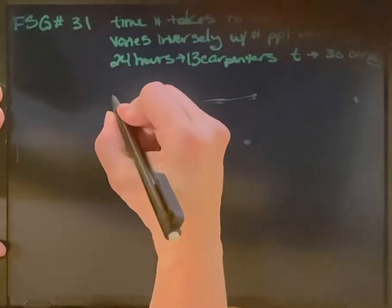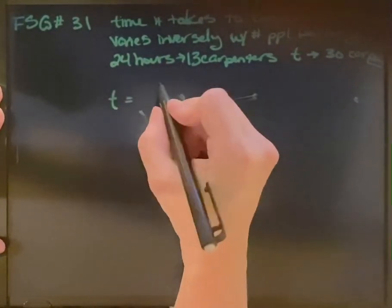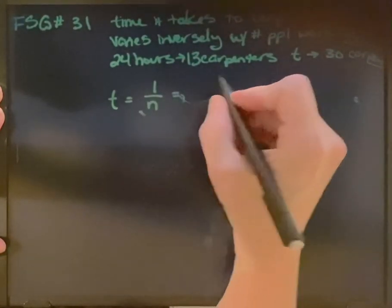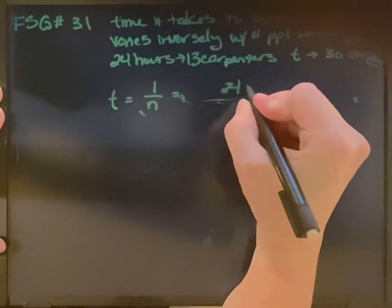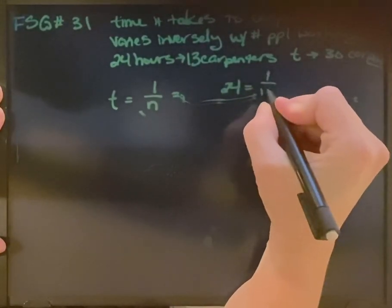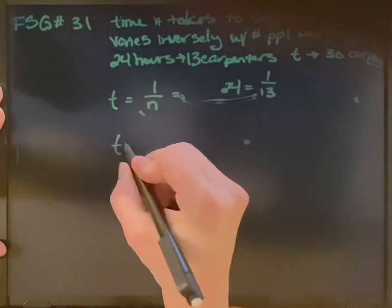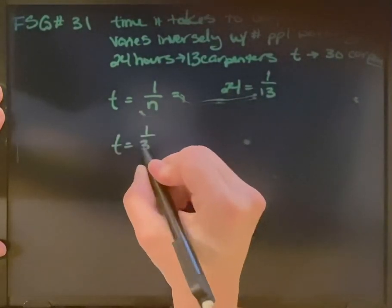So we've got time varies inversely with the number of people. In this case it was telling us that 24 equals 1 over 13 and it wants to know what the time is if there are 30 carpenters.